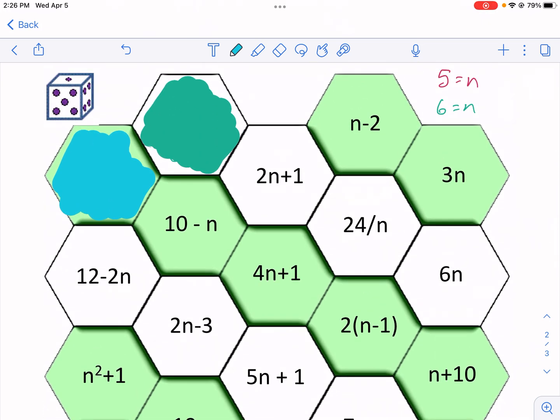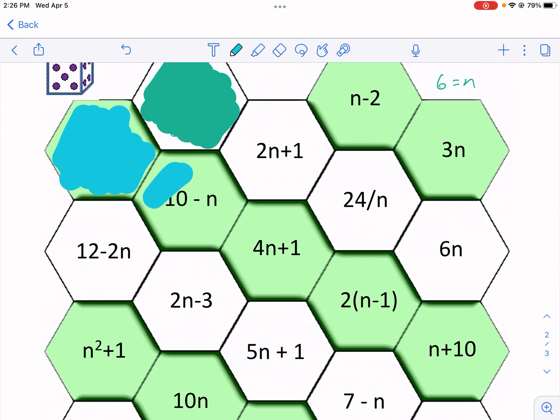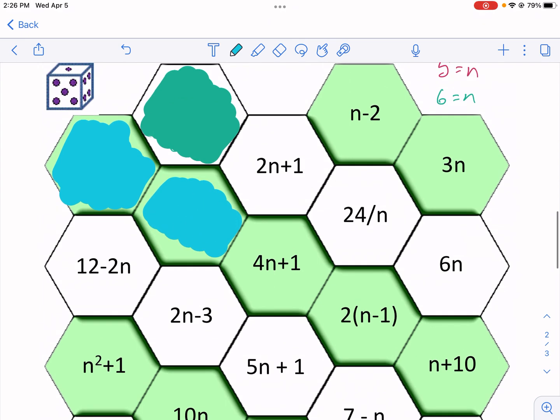I'm gonna roll the die again. This person got another six, so I'm gonna pick that. Then blue could pick 10 minus six, and that'd be four. So then the blue has that one done.